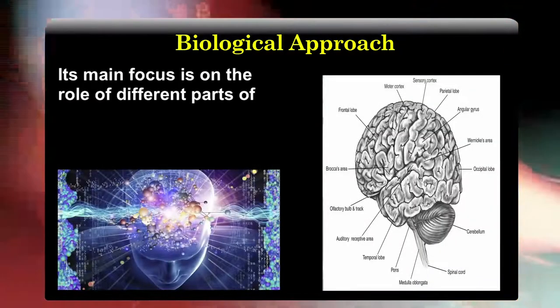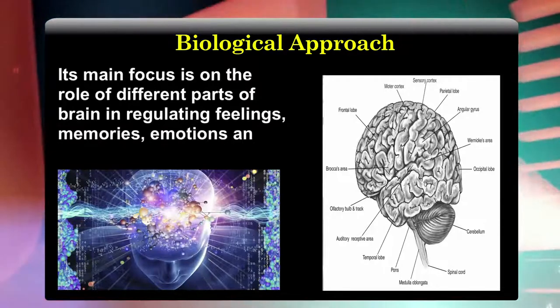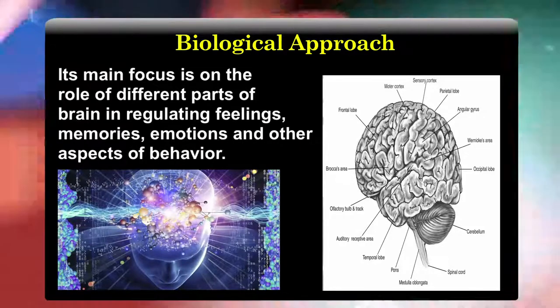The biological approach focuses on biological structures and phenomena such as the brain, genes, hormones, endocrine system and neurotransmitters in order to understand the dynamics of behavior. Its main focus is on the role of different parts of the brain in regulating feelings, memories, emotions and other aspects of behavior. Similarly, the impact of over-secretion or under-secretion of different kinds of hormones in governing behavior is studied. Behavior genetics, as one of the sub-disciplines, studies the genetic determinants of behavior. Moreover, this approach looks for the physiological basis of human behavior.